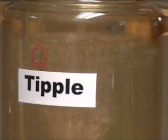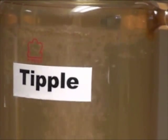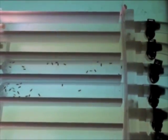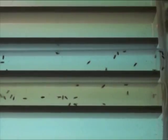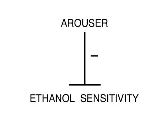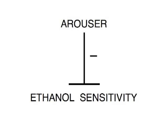To test for sedation, we expose flies to a known concentration of ethanol vapour and measure the time it takes for them to lose their righting reflex. After 15 minutes, the arouser mutant in the bottom tube clearly shows an increased sensitivity to ethanol sedation. Therefore, arouser functions to inhibit ethanol sensitivity.